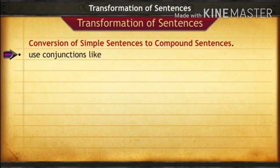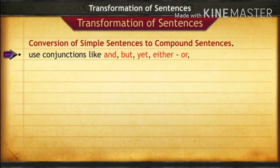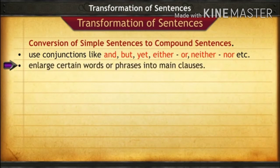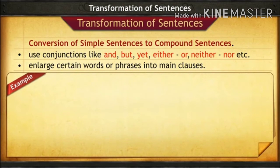For this conversion, we need some conjunctions. We use coordinating conjunctions like and, but, yet, either, or, neither, nor. These conjunctions are used to make compound sentences. Also, we enlarge certain words or phrases into main clauses. Certain words or phrases are expanded for this purpose.